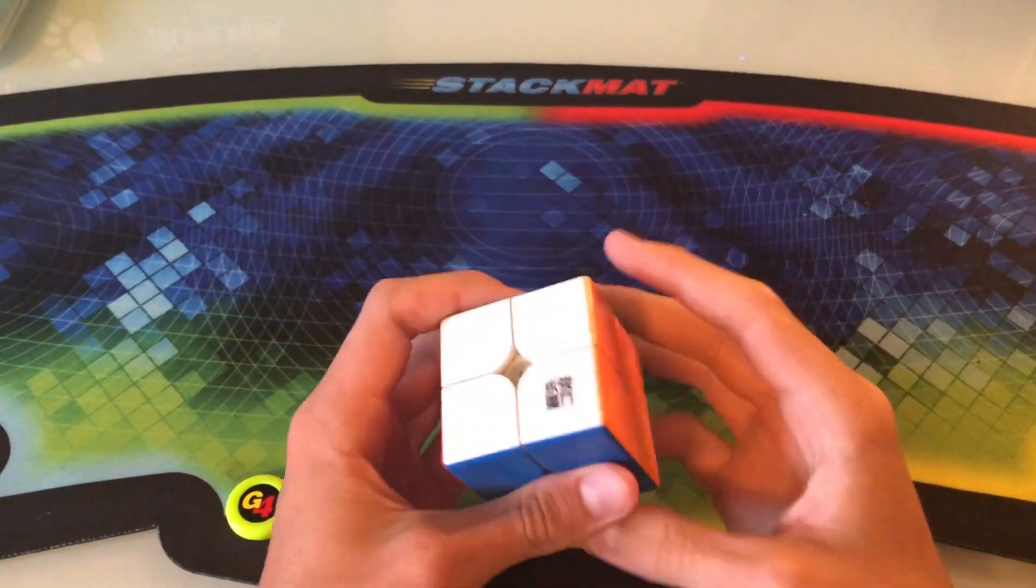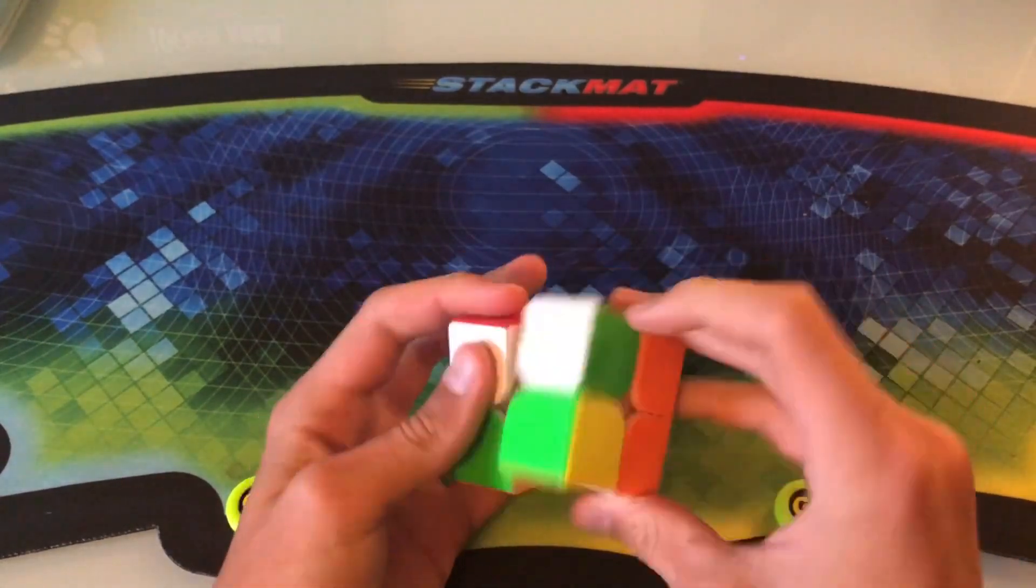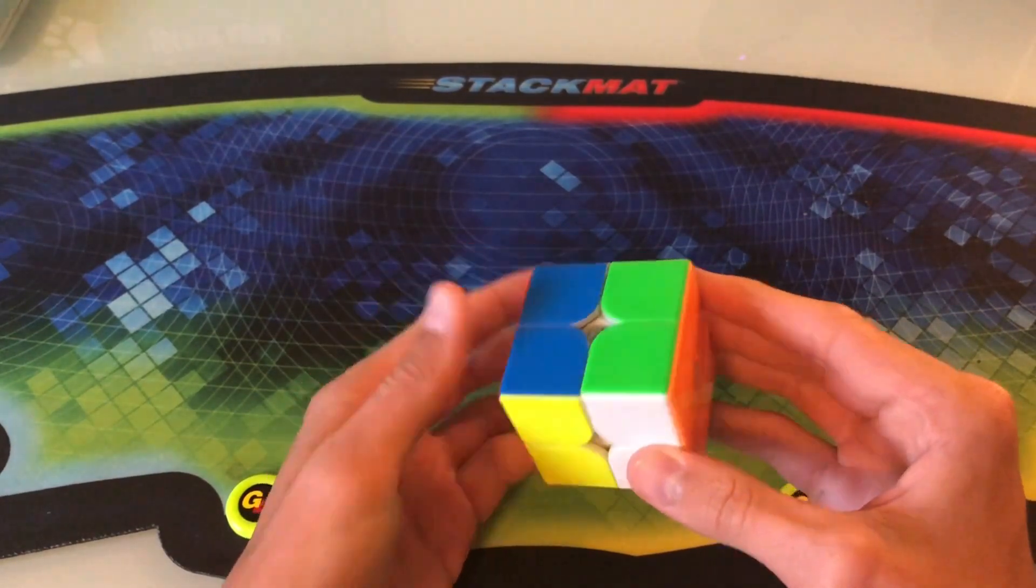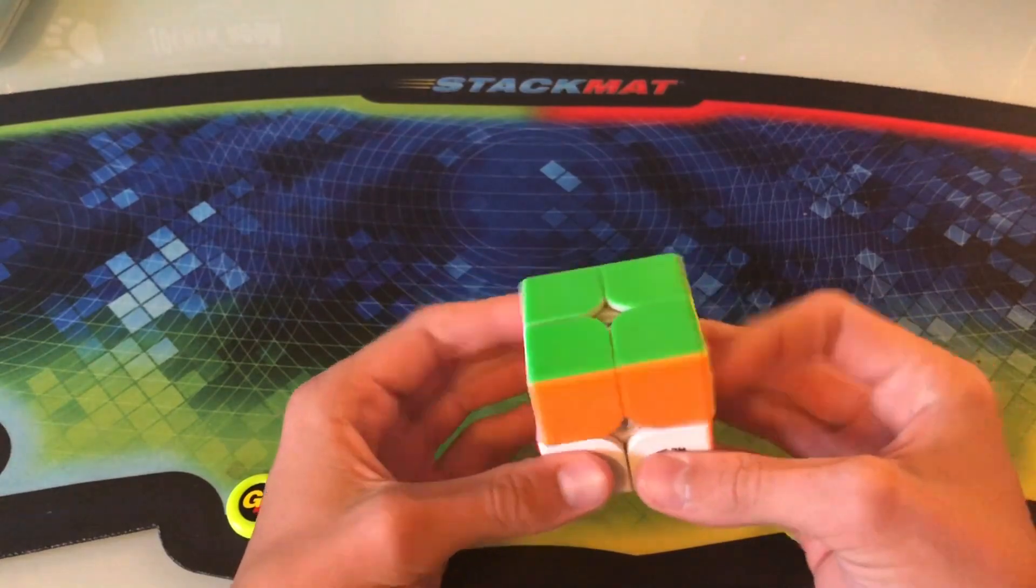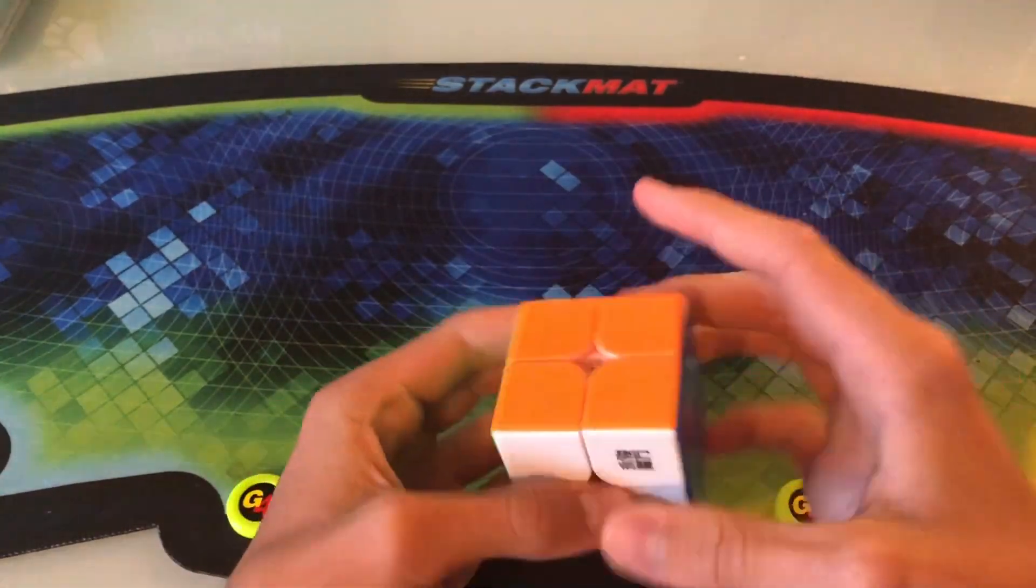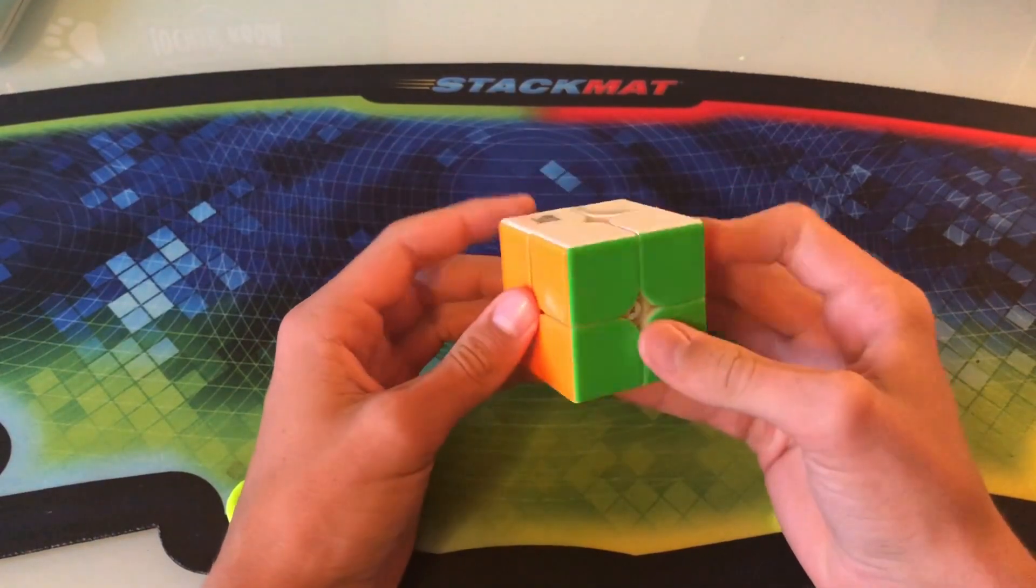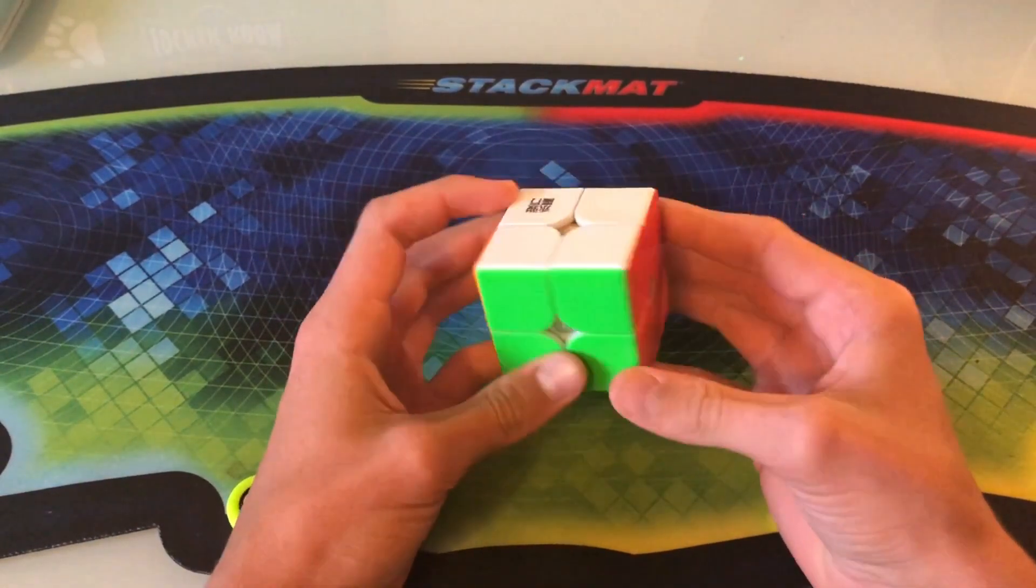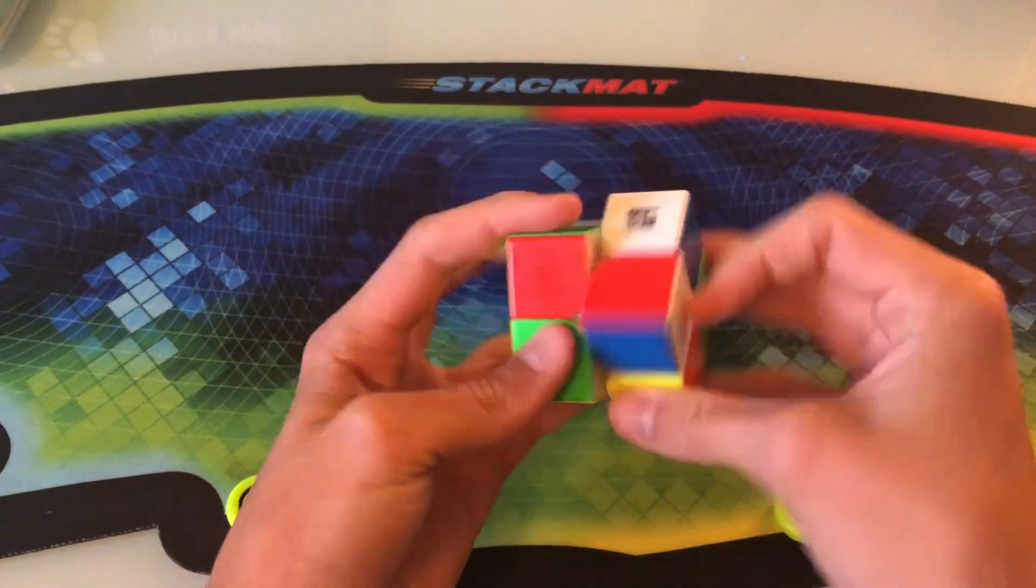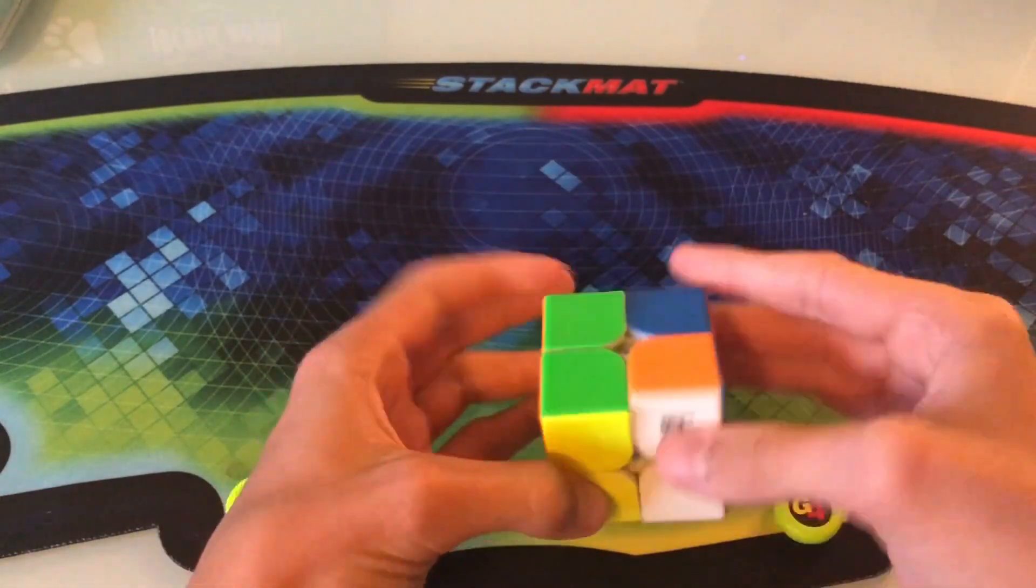I forgot to mention earlier about the magnet strength, since this cube is technically magnetic. It's really light when it comes to the magnets. Like, I'm talking really light. You can't really feel it all that much unless you turn really slowly. And you can kind of see on the screen, they sort of click into place. But when you're turning fast, you can't really feel them at all. But that being said, I do get the sense that they are helping. For example, if this cube didn't have any magnets, I don't think it would, by any means, be of the same quality. So even though the magnets are pretty light, I do think this cube is definitely benefiting from them.